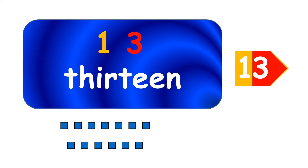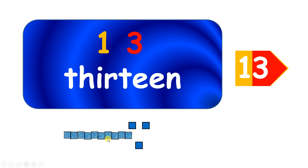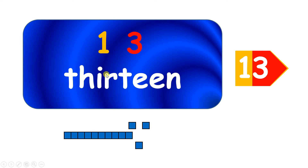Next is thirteen, and as you can see we write thirteen as one, three, because we can make one line of ten and three left over. Thirteen is easy to remember because 'thir' sounds a bit like three. And 'teen' at the end of a number always tells us that we can make one group of ten from it.